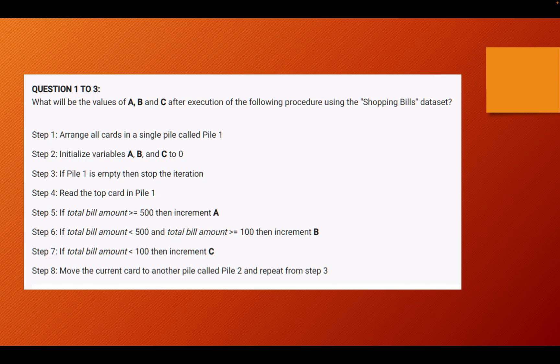Step 1 says that we have to arrange all the cards in a single pile called pile 1. Step 2 says that you have initialized the variables A, B and C to 0. Step 3 says that if pile 1 is empty then stop the iteration. Till here it's quite easy to understand and step 4 says that you read the top card in fact on pile 1.